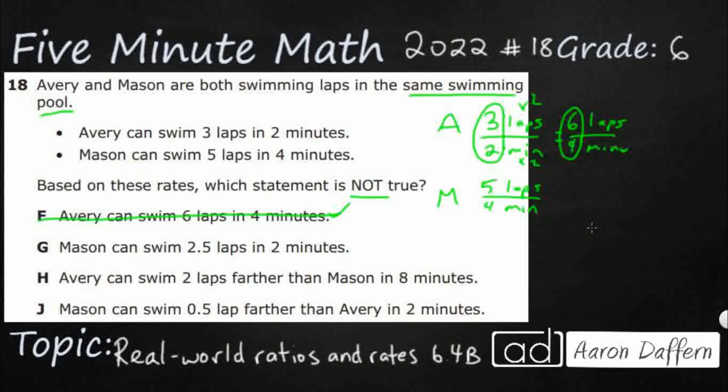Mason can swim 2.5 laps in 2 minutes. Kind of weird to have a decimal as your numerator, but it happens. Let's look at the denominator first, probably a little bit easier. If we divide by 2, 4 divided by 2 makes 2. So if we divide 5 in half, we're going to get 2 and a half. It's weird looking, but it works, which means we don't need it.